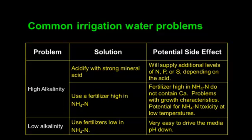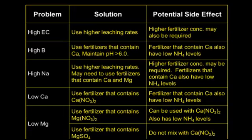For low alkalinity, there's not a real problem — zero alkalinity doesn't mean you can't grow good quality crops. But it does mean it's very easy to drive the media pH down, so you have to be very careful using ammoniacal nitrogen fertilizers. For high EC, use a high leaching rate and higher fertilizer concentrations to compensate for that high leaching rate.